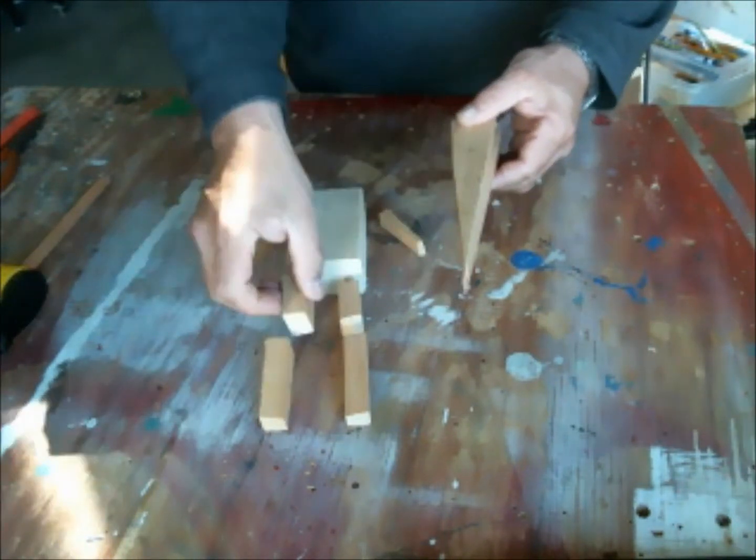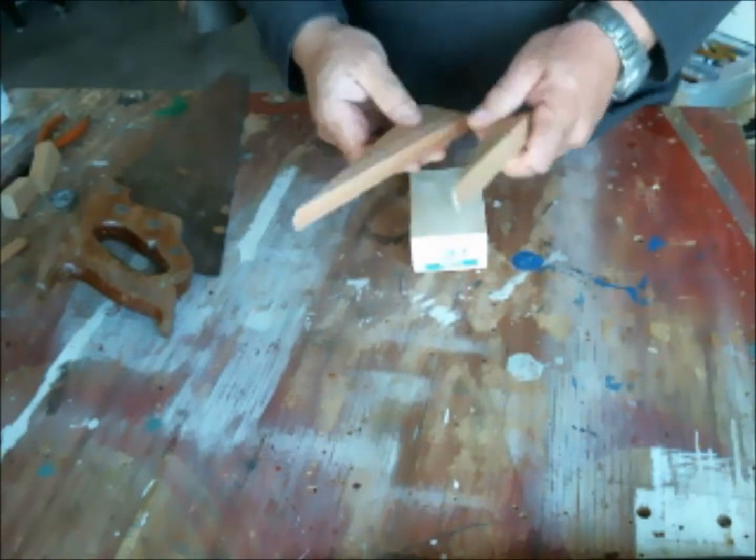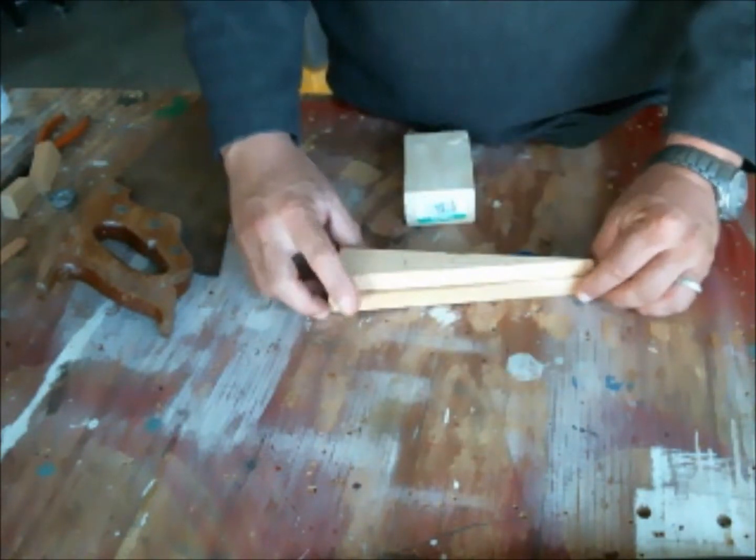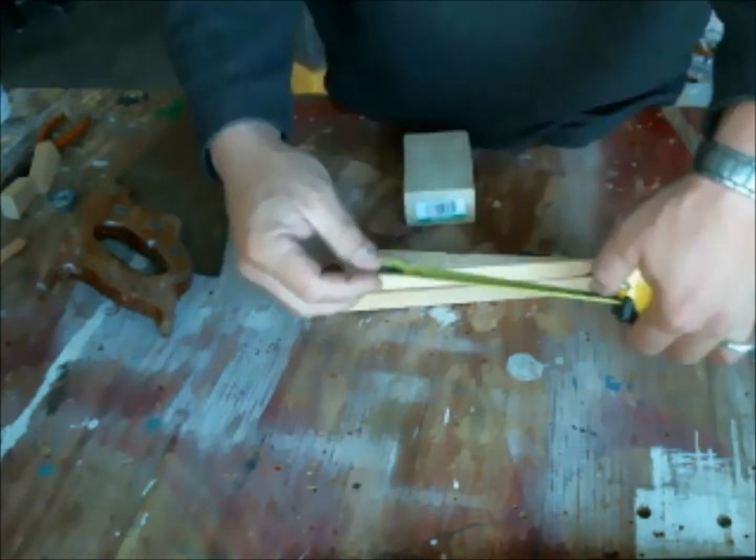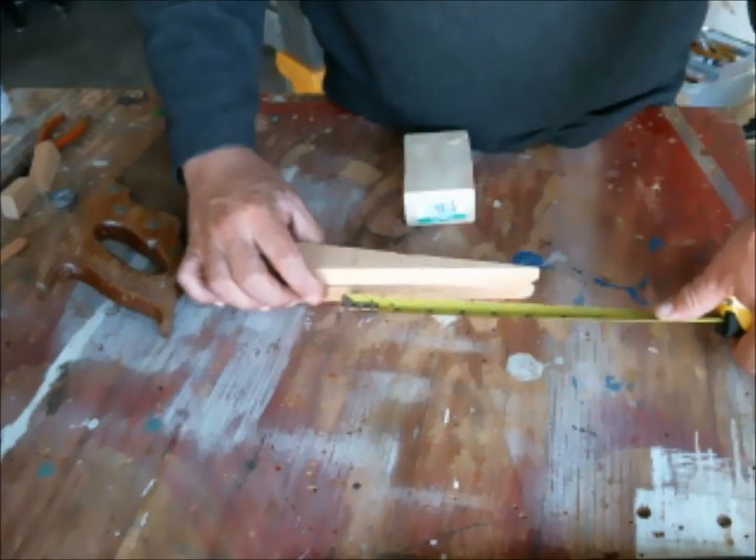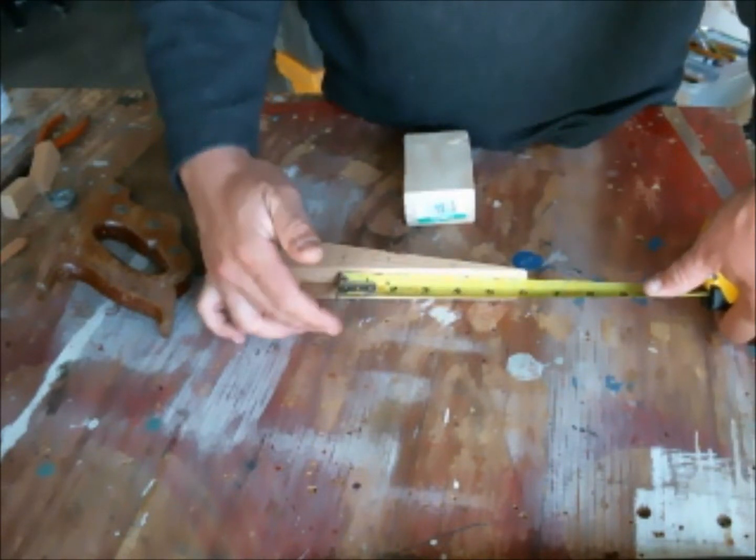You can see, so with a simple saw, get your tape measure, saw and a pencil, and we'll mark these sections. I make the arms about two inches, the upper legs about an inch and a half, and the bottom of the legs about two inches.